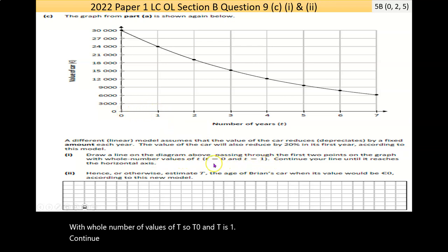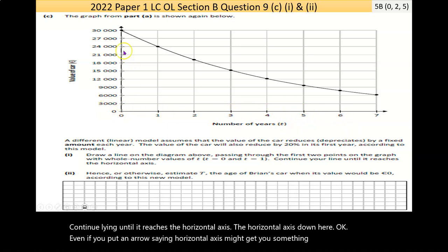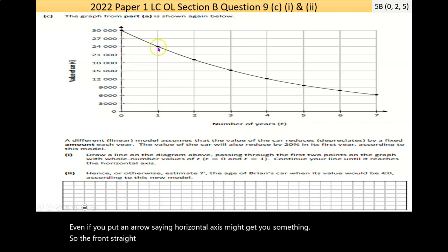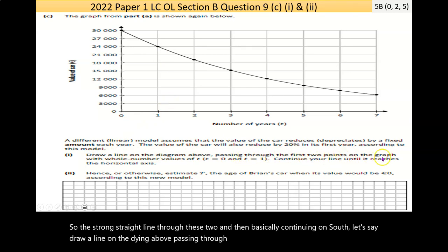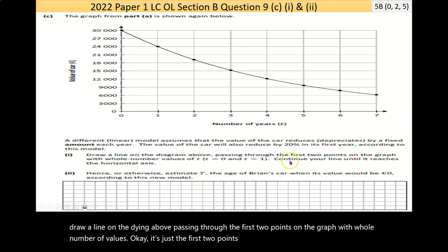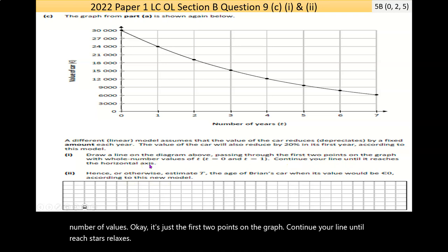It says, draw a line on the diagram passing through the first two points on the graph with a whole number of values of T. So T is 0 and T is 1. Continue your line until it reaches the horizontal axis. The horizontal axis is down here. Even if you put an arrow saying horizontal axis, it might get you something. We've drawn a straight line through these two, and then basically continuing on.